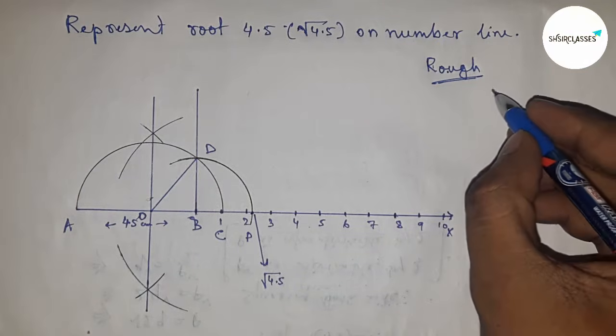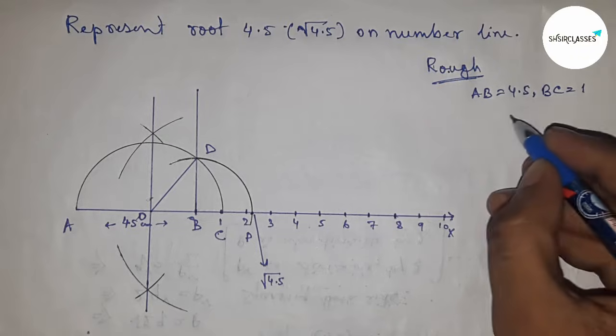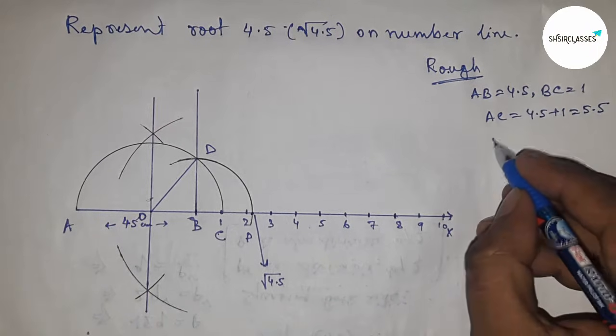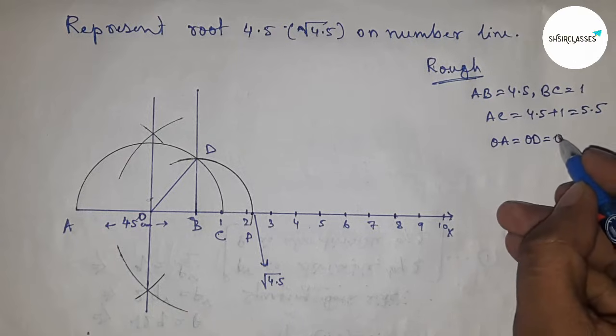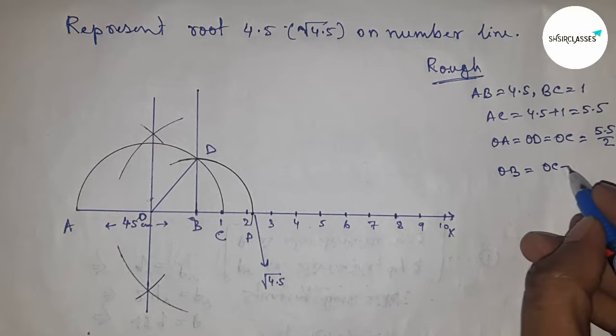Next, roughly discussing the calculation of root 4.5. So given AB equals 4.5 and BC equals 1, so AC equals 4.5 plus 1, which equals 5.5. So the radius of the semicircle OA, OD, OC equals 5.5 by 2.